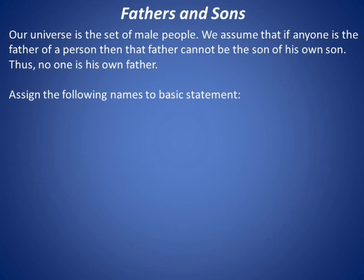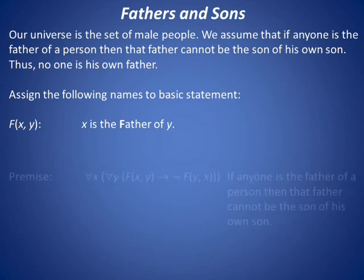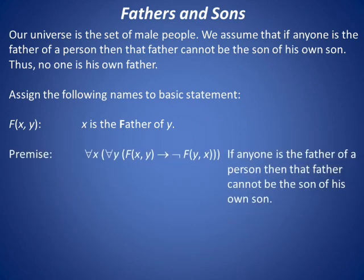Let's begin by defining the predicate. F of X and Y means X is the father of Y. From the story and the predicate, we may represent the premise as follows.